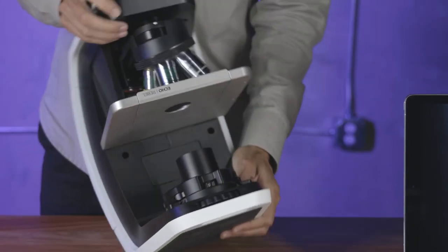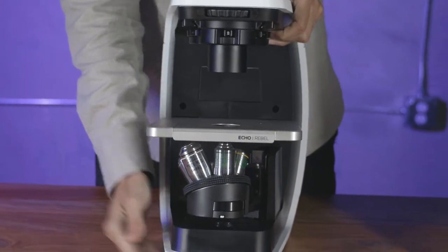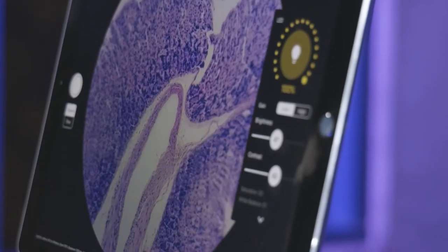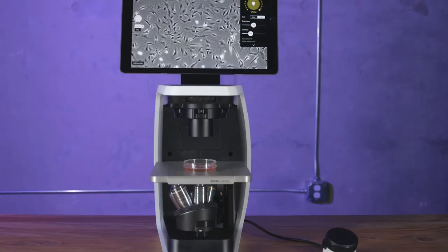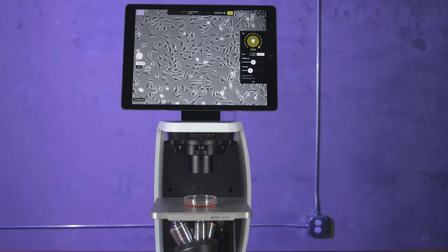REBEL is a hybrid microscope and can easily convert between both upright and inverted modes. This gives you two systems in one, where you can look at glass slides and brightfield, and in seconds, switch over and look at live cells using phase contrast. This saves you resources, bench space, and valuable time.